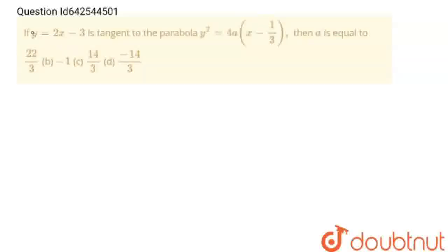Hello students, the question is: if y equals 2x minus 3 is a tangent to this parabola, then a is equal to... and there are 4 options.